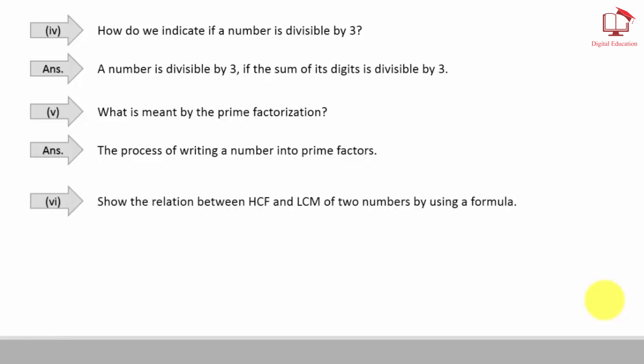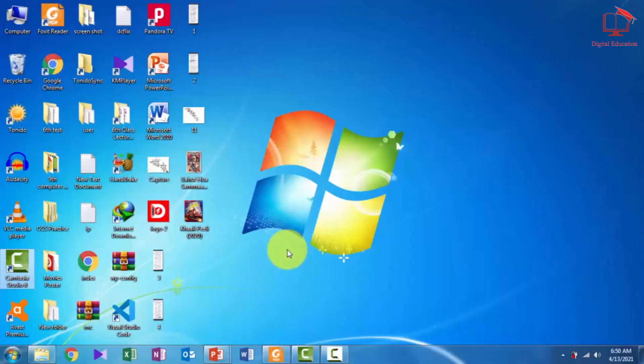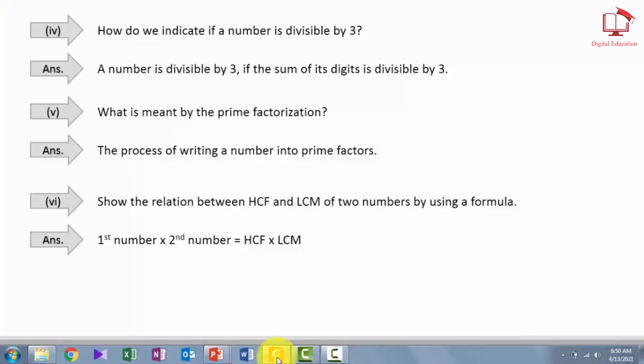Part 6. Show the relation between HCF and LCM of two numbers by using a formula. Answer: First number multiplied by second number is equal to HCF multiplied by LCM. So students, let's move forward to fill in the blanks.